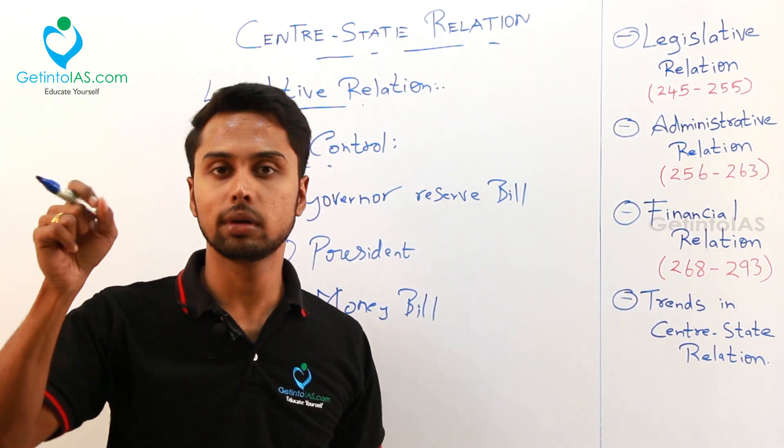The Concurrent List is common for both center and state. In the Union List with 99 items, only your center can make laws — that is exclusive to parliament. In the State List with 61 items, your state legislature can usually make laws, but it is not exclusive, because parliament can also make laws on the state list on some special occasions — there are five such occasions which we will study.